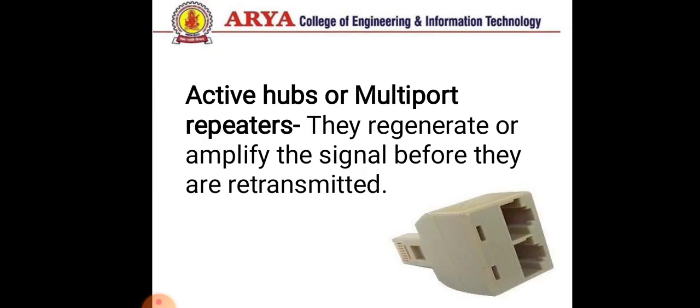Now moving on to active hubs. An active hub regenerates or amplifies the signal before it is retransmitted — that means an active hub is actually a multi-port repeater. It is normally used to create multiple levels of hierarchy, such as in a physical star topology. Basically, a hub is used to connect computers directly, and when data packets arrive at the hub it broadcasts them to all the LAN cards in the network.